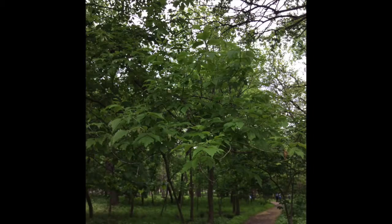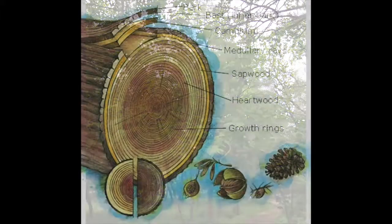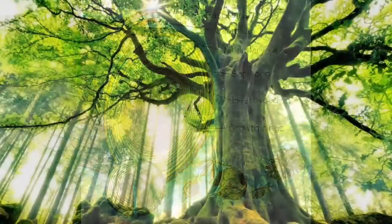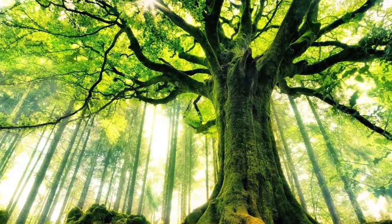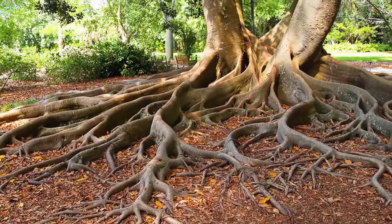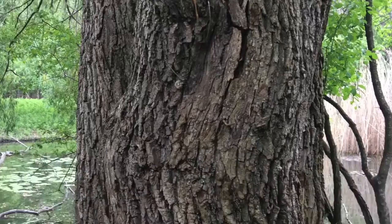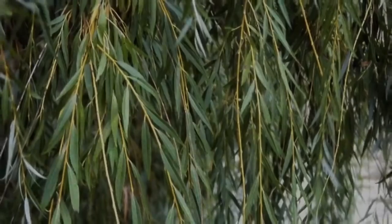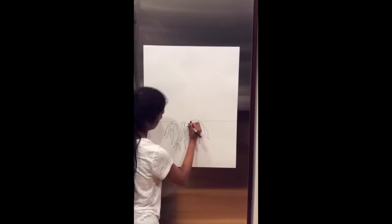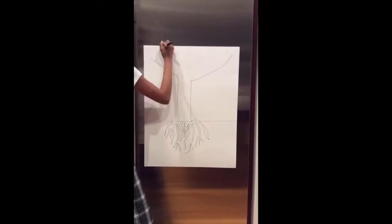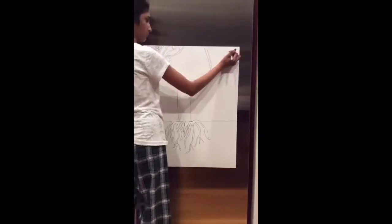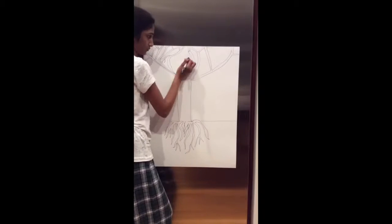But how does this all affect the trees? Well, first we need to understand tree anatomy. There are four main external structures of a tree: roots, trunk, branches, and leaves. The roots are responsible for drawing nutrients and water from the soil and bringing it to the leaves, the trunk, and the branches.